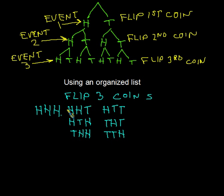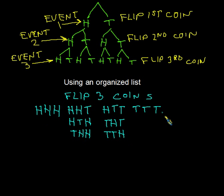Notice the organization of the list: three heads, two heads, one head. And then finally, no heads at all — just tails-tails-tails. These are all the possible outcomes of flipping three coins, and again we came up with eight possible outcomes.